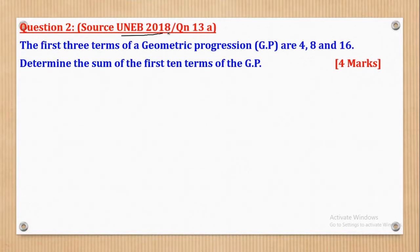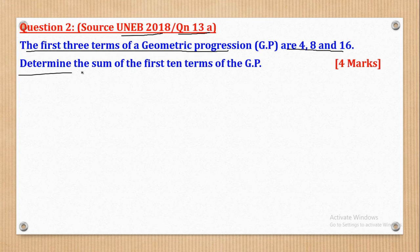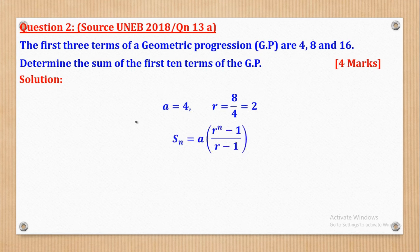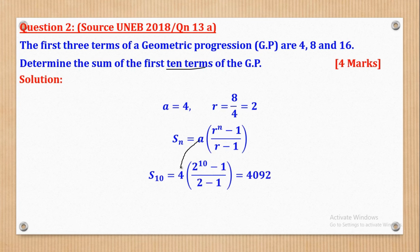Question 2 (UNEB 2018, Paper 1, Question 13a): The first 3 terms of a GP are 4, 8, and 16. Determine the sum of the first 10 terms. A = 4 and the common ratio R = 8/4 = 2. With A, R, and N = 10 all known, using the sum formula and a calculator gives S10 = 4092.